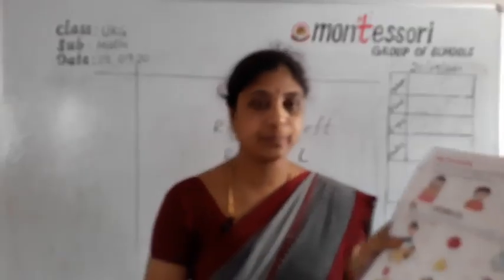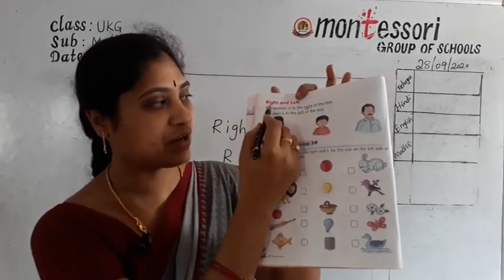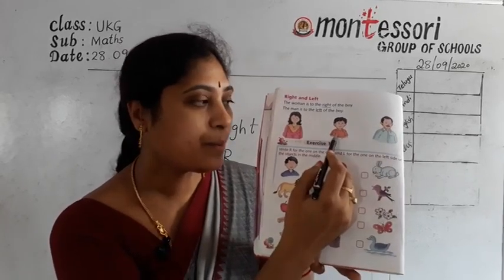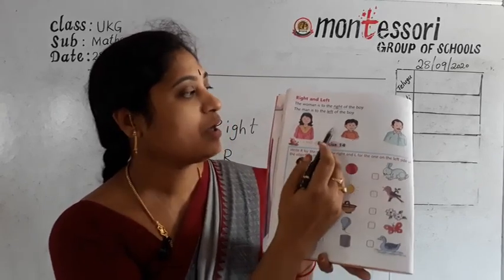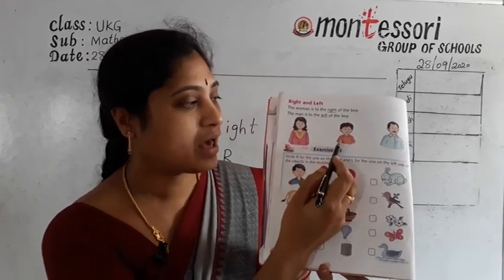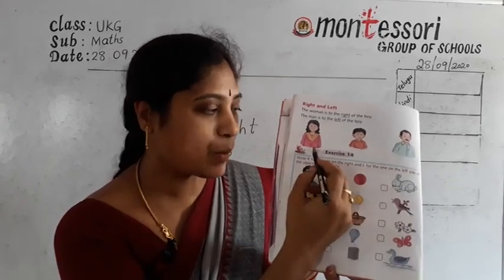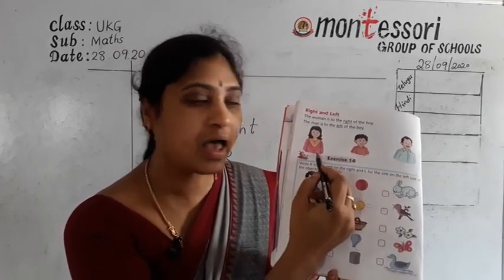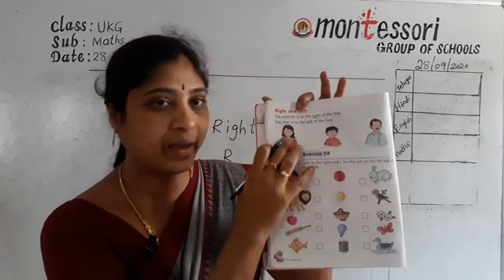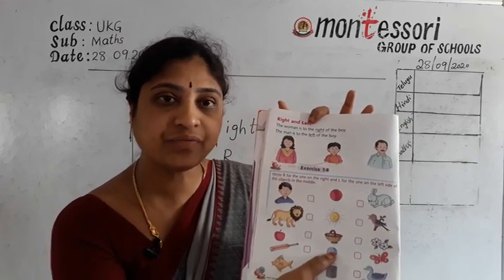Now open your math test book to page number 16. In page number 16, we have right and left. Here there is a boy, a woman, and a man. The woman is to the right of the boy. The man is to the left of the boy.